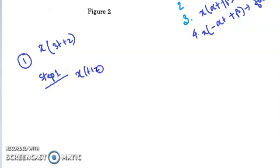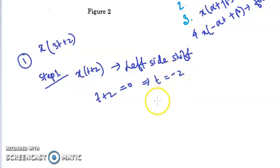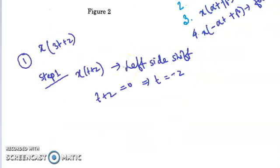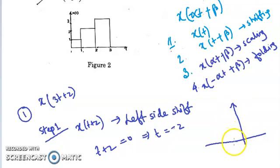Finding X(T+2) involves a left-side shift, because if you put T+2 equal to 0, then we get T equal to −2. That means the signal originally starting at 0 now starts at T = −2.